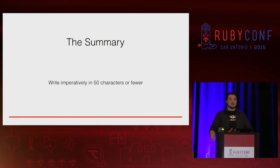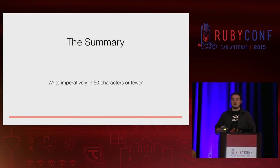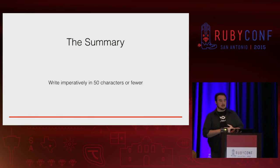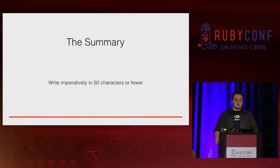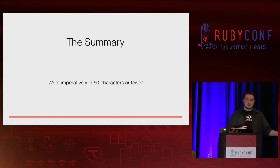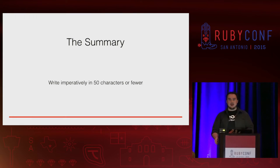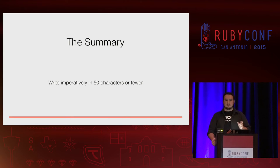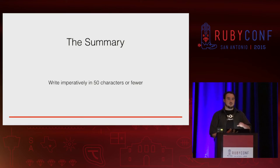So how do we do this? Summarize. The next two parts about the summary and the message come from Tim Pope's article where he talks about a more useful git message. We write imperatively in 50 characters or fewer. The reason we start with an imperative command is to match the way git revert and git merge automatic messages work. So write this, add that, remove this — start with an imperative command, and keep it under 50 characters.